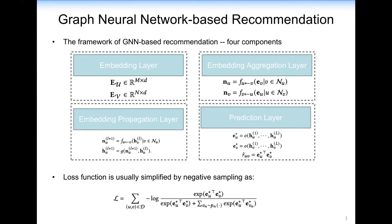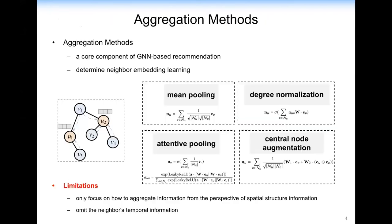We use BPR loss with negative sampling for optimization. As shown in the last slide, the aggregation method plays an important role in GNN-based recommendation. Many GNN-based recommendation works have investigated good aggregation methods to learn embeddings for users and items from the perspective of spatial structure information, including mean pooling, degree normalization, alternative pooling, and center node augmentation.